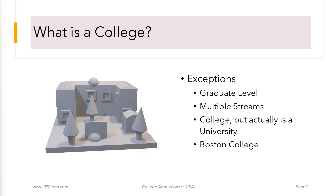As I said before, there isn't a definition for the term college, and so there can be some exceptions to the properties we just saw. For example, a college can offer graduate level degrees such as Master's degrees. They can offer degrees in multiple streams such as Engineering, Liberal Arts, etc. An institution can call itself a college, but it actually may be a university.